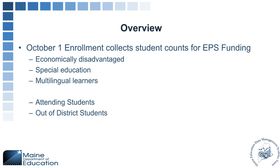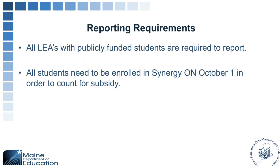The October 1 Enrollment Report collects student counts for EPS funding purposes. We are looking at economically disadvantaged students, special education counts, and multilingual learner counts — this is for attending students as well as out-of-district students who are placed elsewhere. All LEAs with publicly funded students are required to report, and all students need to be enrolled in Synergy on October 1.